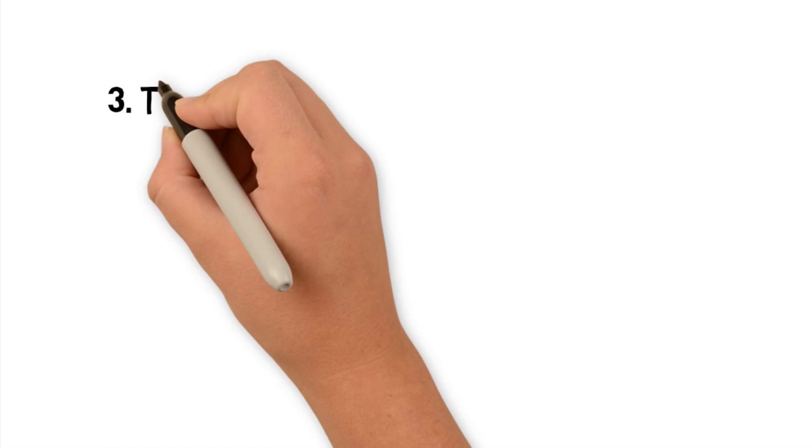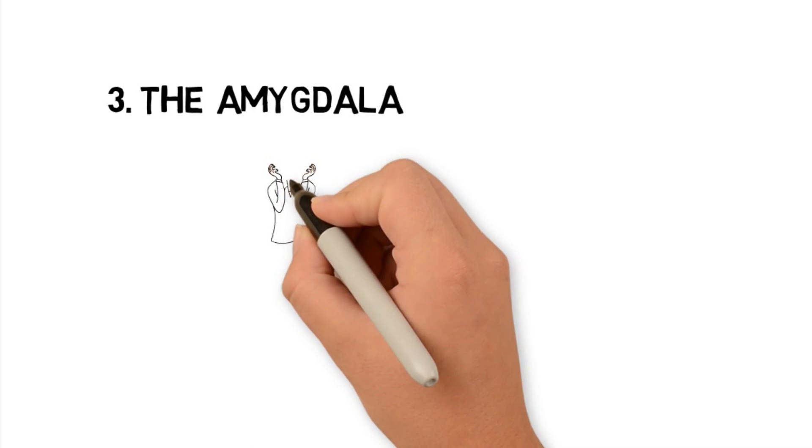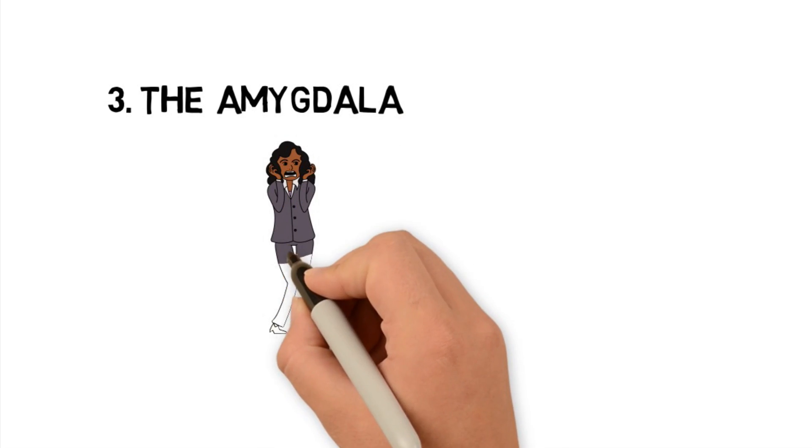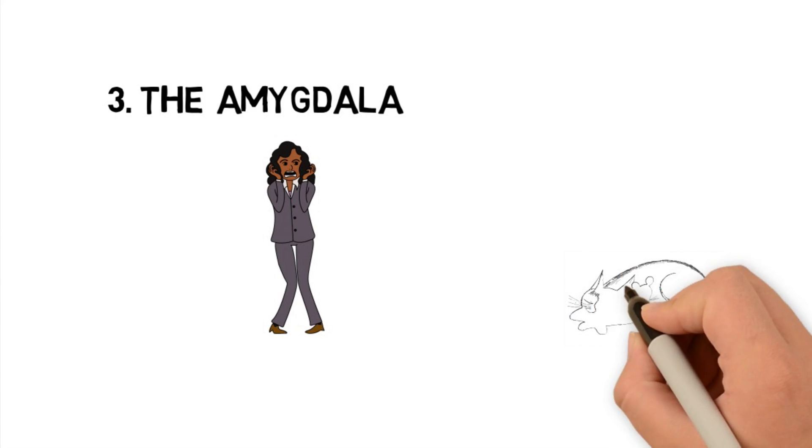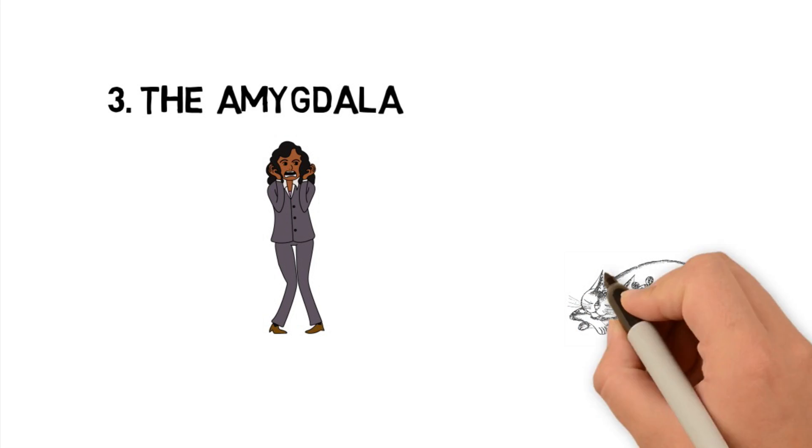Next in our limbic system is the amygdala. The amygdala is involved in our basic animalistic emotions like rage and fear. When scientists remove the amygdala from rats, they no longer fear cats. Good for them.